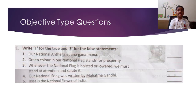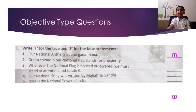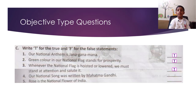Section C: Write T for true and F for false. Question 1: Our national anthem is Jana Gana Mana — True. Green color in our national flag stands for prosperity — True. Whenever the national flag is hoisted or lowered, we will stand to attention and salute it — True. Our national song was written by Mahatma Gandhi — False. Rose is the national flower of India — False.